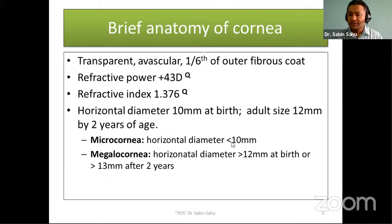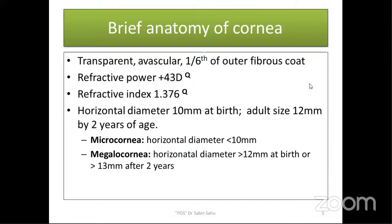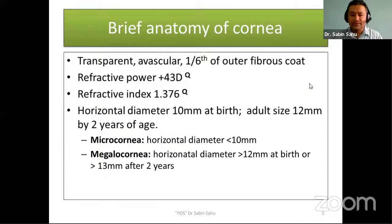Let's talk about the brief anatomy of the cornea. Cornea is a transparent avascular structure which covers the outermost one-sixth part of the outer fibrous coat, the rest five-sixths being covered by sclera. The refractive power of cornea is 43 diopters, around three-quarters of the total 60 diopters of the eye. 17 diopters is contributed by the lens. Refractive index of cornea is 1.376. The horizontal diameter at birth is 10 mm, reaching adult size of 12 mm by 2 years of age. If less than 10 mm, it is called microcornea; if more than 12 mm at birth or more than 13 mm after 2 years, it is called megalocornea.